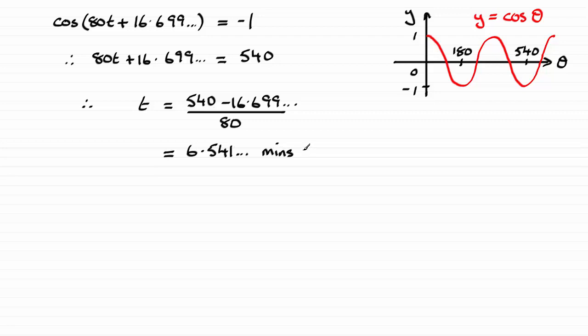And we need to give the time to the nearest second. So what you can do is we know this is going to be 6 minutes, but this is 0.541 of a minute. Now if you did 0.541 and so on times 60, that would give us the number of seconds. So if you do that, you'll find you'll get 6 minutes then and 32.47 and so on seconds. So to the nearest second, it's going to be 6 minutes, 32 seconds.